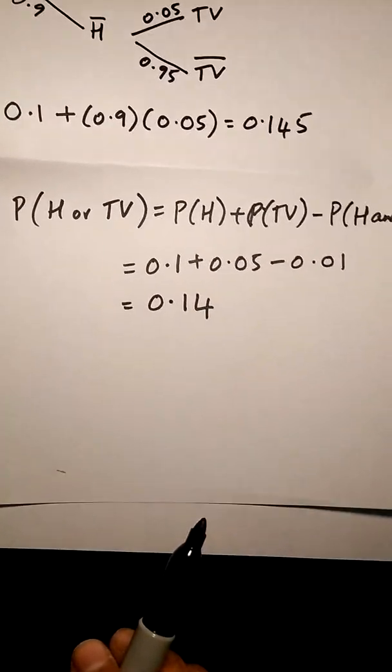Okay, in this case, we know the probability that a customer will buy headphones is 0.1, TV is 0.05, and both 0.01.